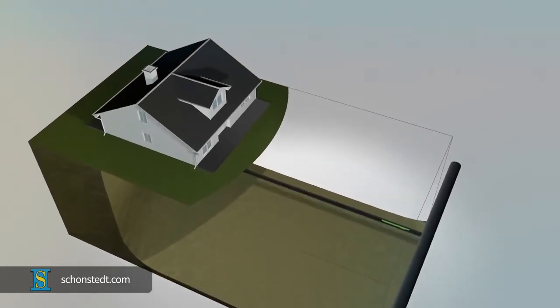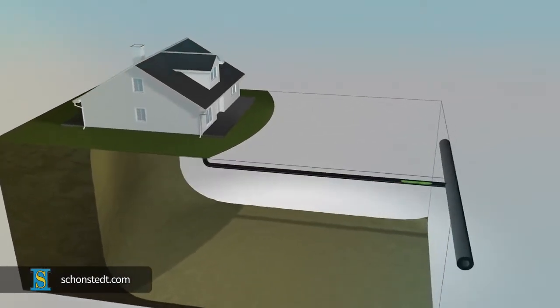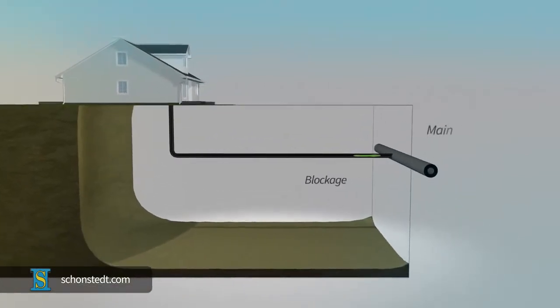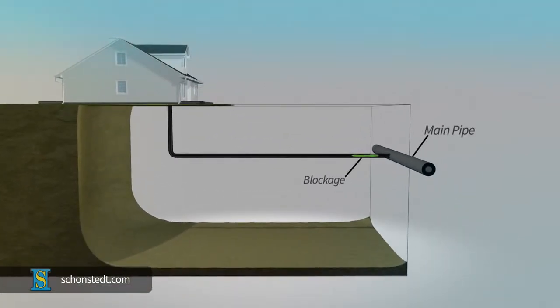Sondes are typically used to locate a blockage in a PVC pipe going from a house or building to a street or main pipe a short distance away. It is necessary to have a general idea of where the sonde might be and in what direction it is being pushed.